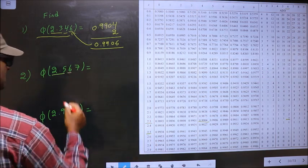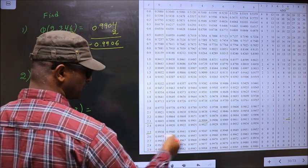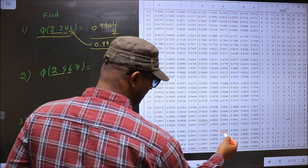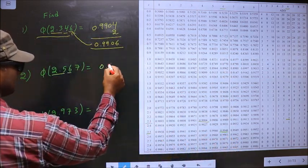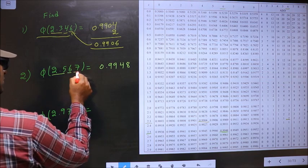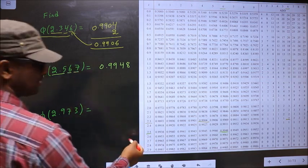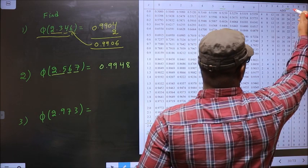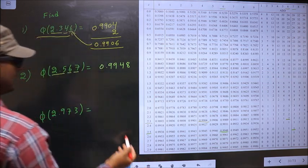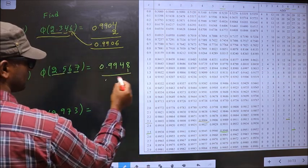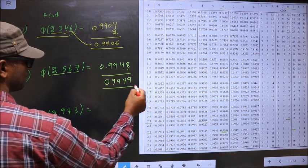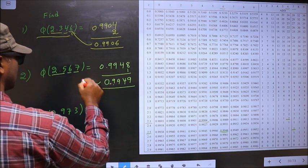Now the next number is 6. So in this row at number 6 I have this number, that is 0.9948. Now you have the number 7. So in this row we get 0.9949. So this is the answer for this one.